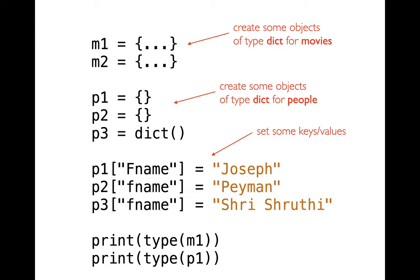I could also use dictionaries to represent people. Here I'm creating three people and they're slightly different — I'm adding keys and values afterwards, setting a first name for each. These happen to be your TAs. We can see there's a special syntax for creating dictionaries using two curly braces. The other way is to say the type name — type dict — and then parentheses. That's actually what we're going to be seeing more commonly going forward. You only get special syntax like curly braces for built-in Python types.